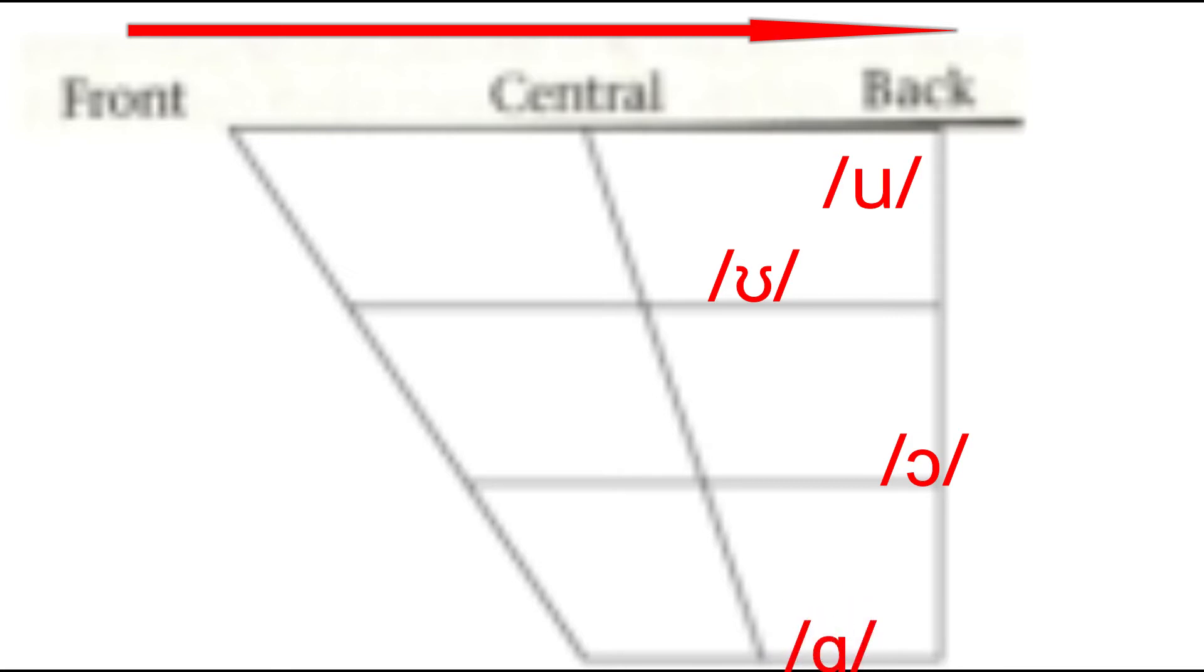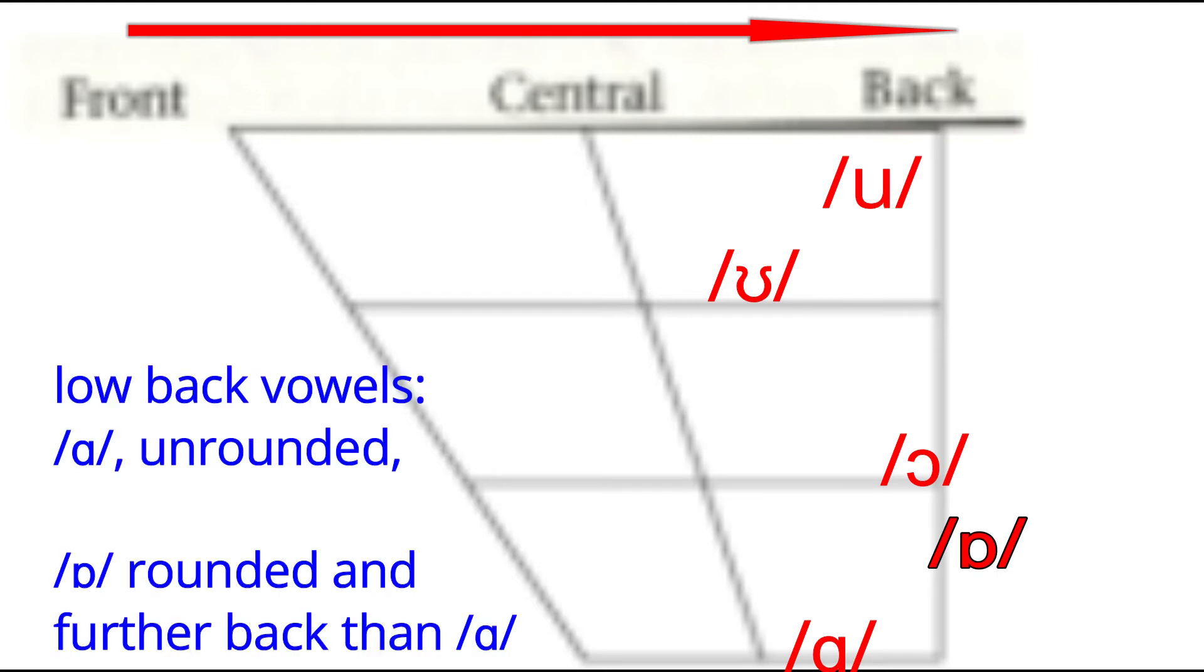In British English, there are two low back vowels: A and O. A is unrounded and O is rounded. Because of this, the tongue position for A is lower than that of A. A occurs further back than A. For this reason, some linguists view A as a central vowel rather than a back vowel.